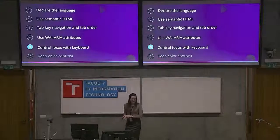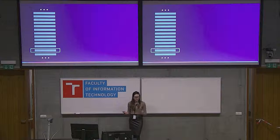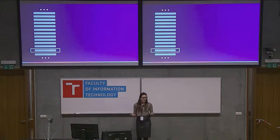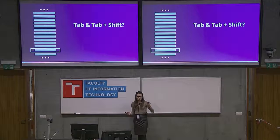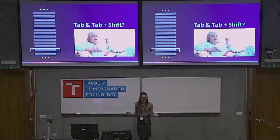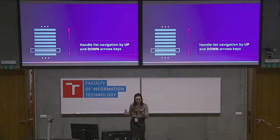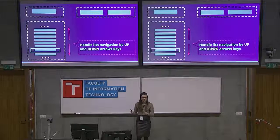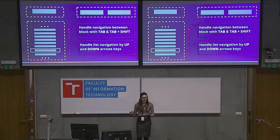Fifth: control focus with keyboard. For example, if you have a very long selectable list, you probably don't want users to tab through the entire list and back. Just add navigation with arrow up and down between list items, and use Tab and Shift+Tab between larger sections. It's a more intuitive way to navigate with the keyboard.